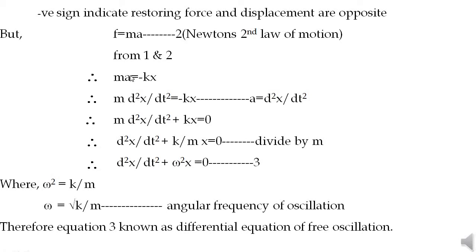From equations 1 and 2: ma = −kx. Since acceleration a = d²x/dt², substituting gives m(d²x/dt²) = −kx. Moving the right-hand side to the left: m(d²x/dt²) + kx = 0.